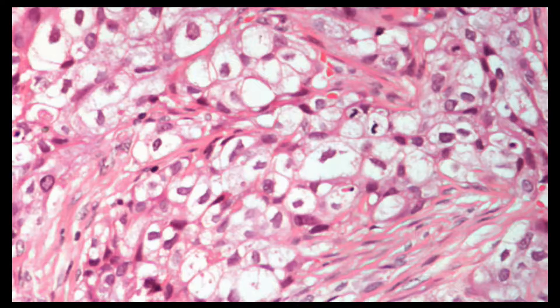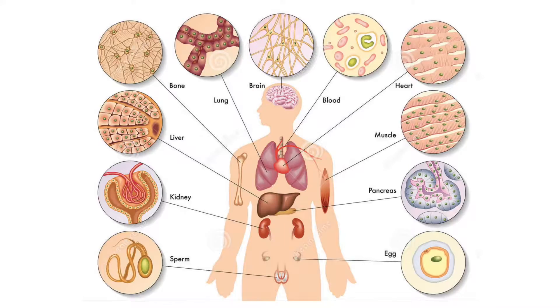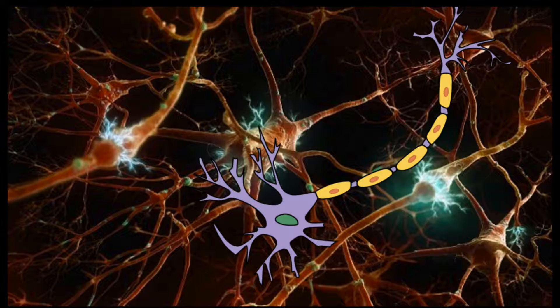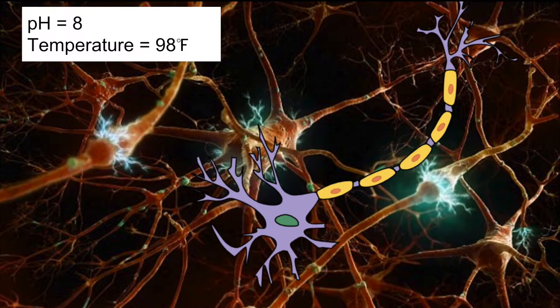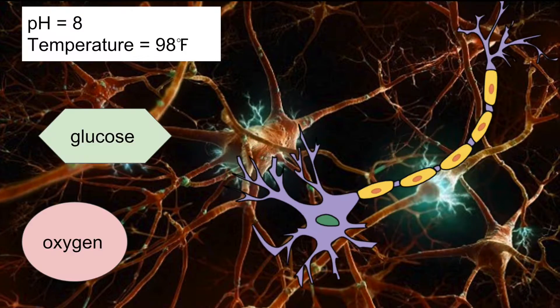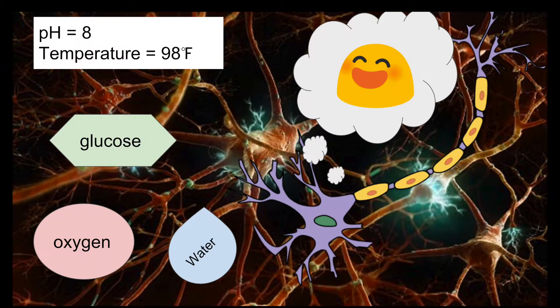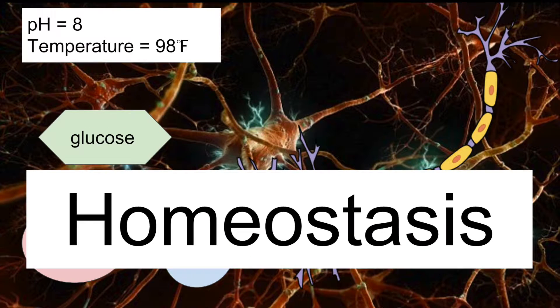Each of our bodies is made of cells. In order to do their unique job, each type of cell needs to have the correct environment and materials to operate. Maintaining that perfect environment for cells is called homeostasis.